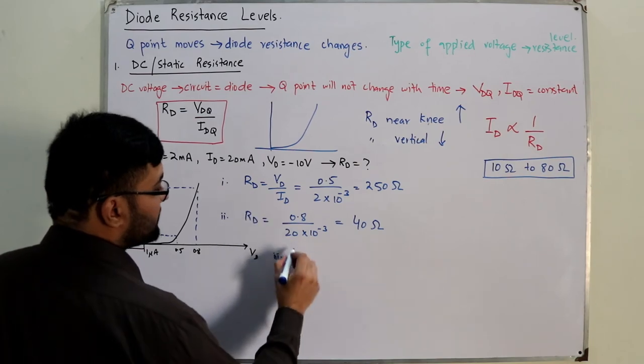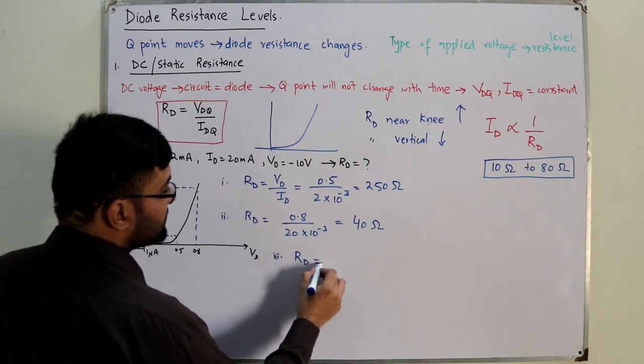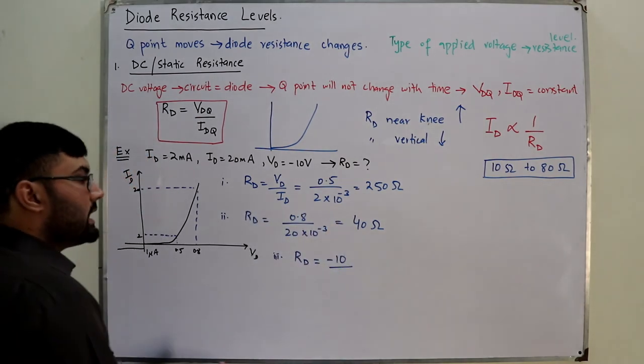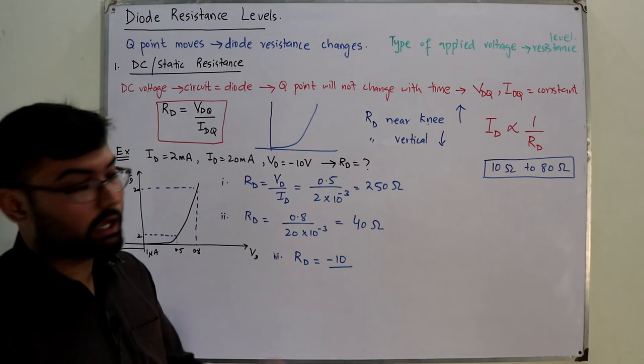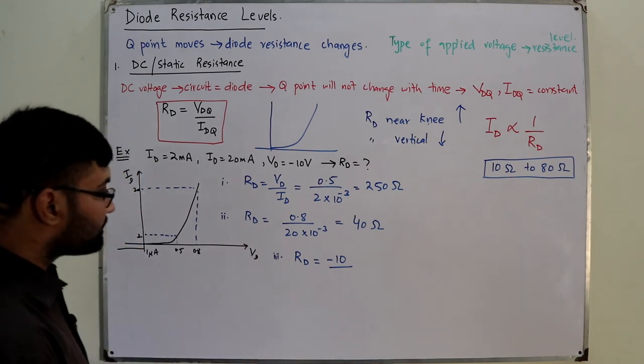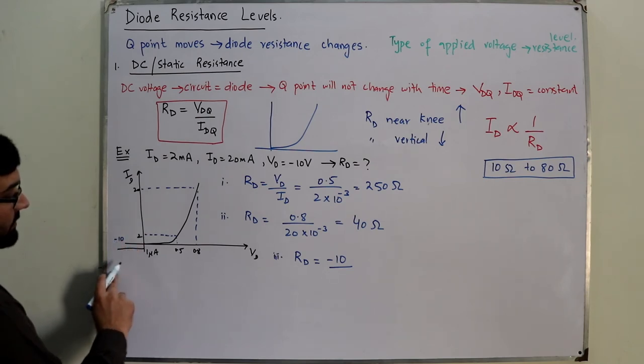We have a part as well for this one. So you have your Rd, this is Vd upon Id. Vd is given, which is your negative 10 volts. And this negative, I do not need to write over here. Of course, this negative indicates the reverse biasing. And for the reverse biasing, let's say over here we have negative 10.